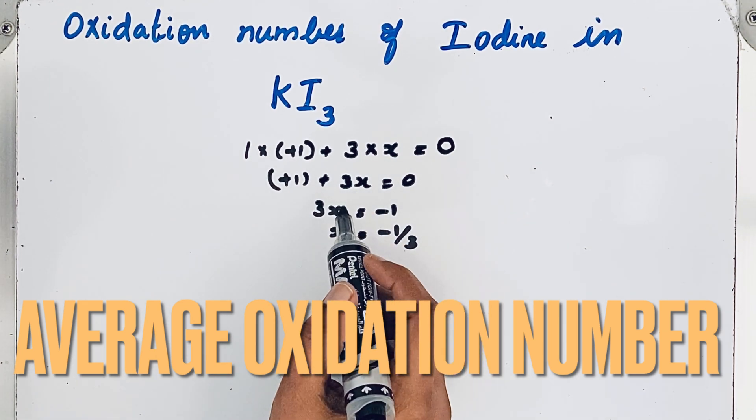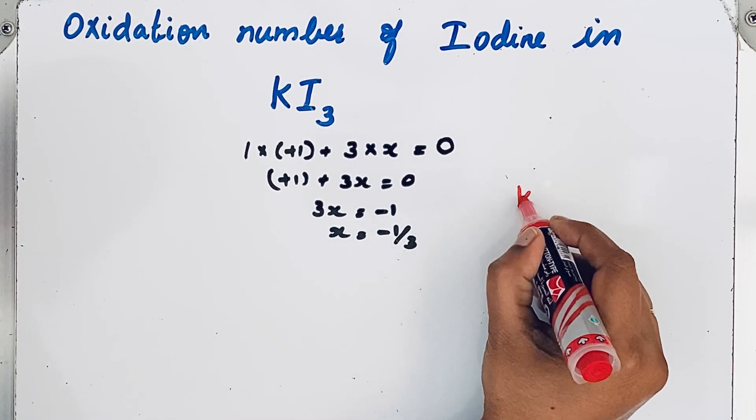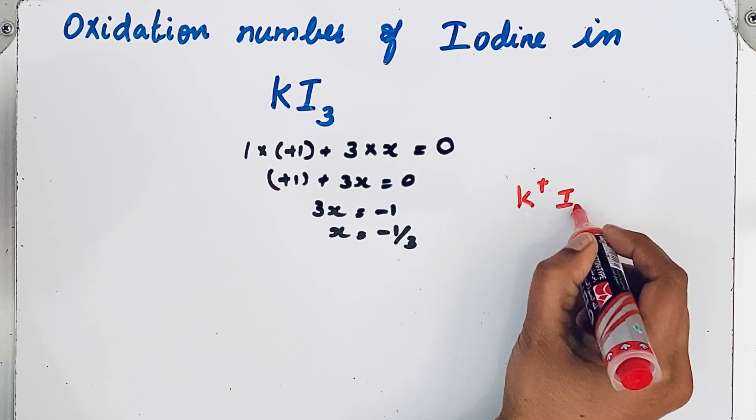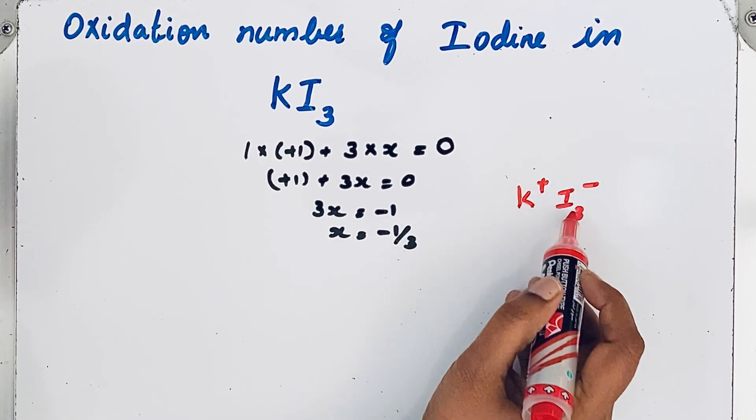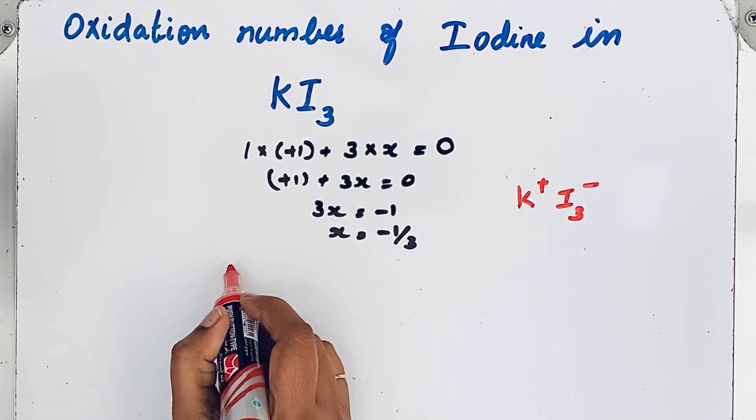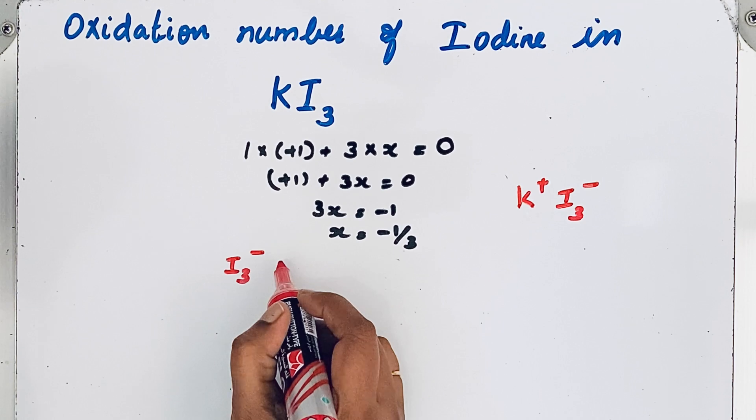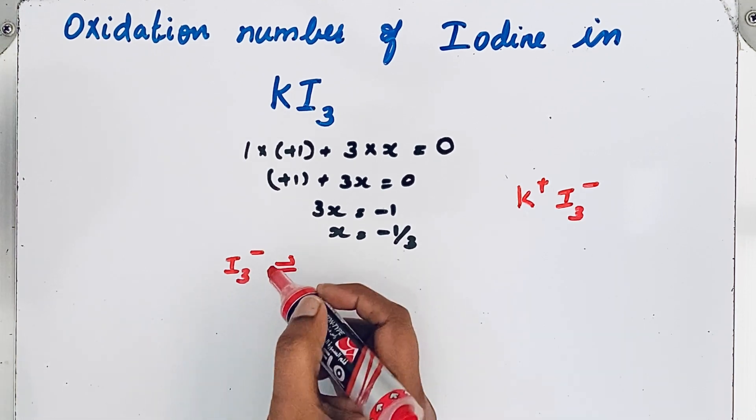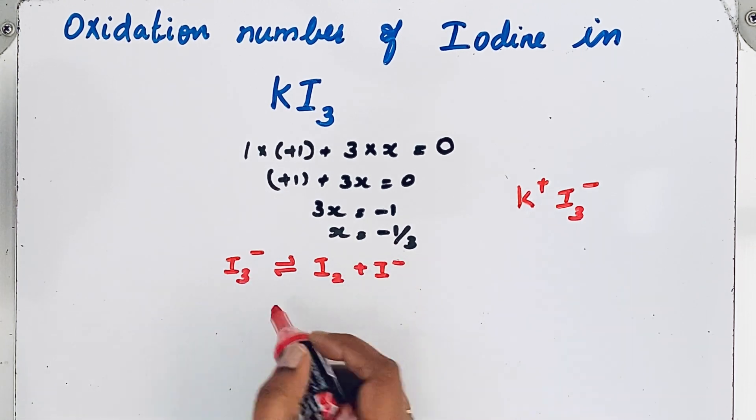So we should know that I₃ minus ion. KI₃ is an ionic compound having K plus and I₃ minus ion. So let us see how these I₃ minus ions are formed. This I₃ minus ion, that means triiodide ion, is formed by the combination of iodine molecule and iodide ion.